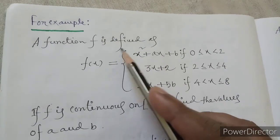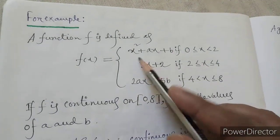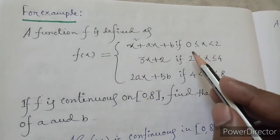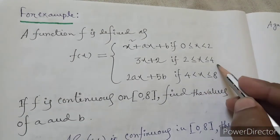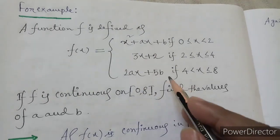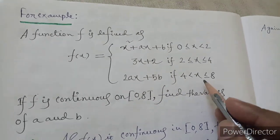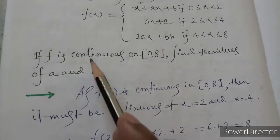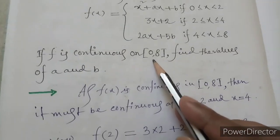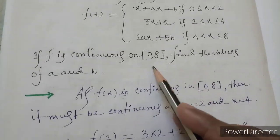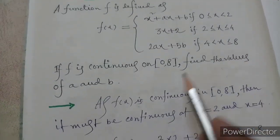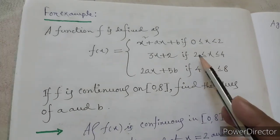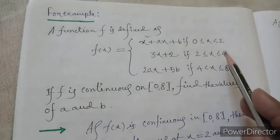For example, a function f is defined as: f(x) equals x squared plus ax plus b if 0 ≤ x < 2; 3x plus 2 if 2 ≤ x ≤ 4; and 2ax plus 5b if 4 < x ≤ 8. If f is continuous on the closed interval [0, 8], find the values of a and b. The key points here are x equal to 2 and x equal to 4.